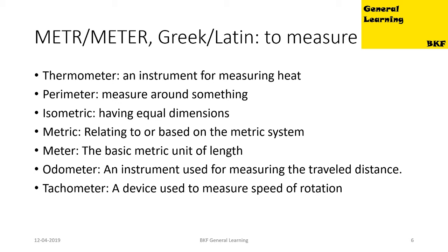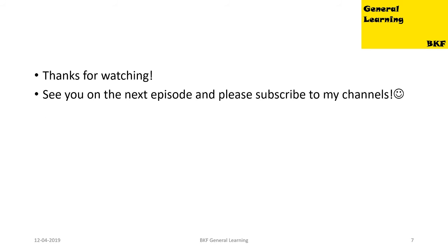'Odometer' is a noun — an instrument used for measuring travel distance. 'Tachometer' is a noun — a device used to measure speed of rotation. Okay guys, this was it for this episode. I hope you liked the video. Thanks for watching, see you in the next episode, and please subscribe to my channel. Bye.